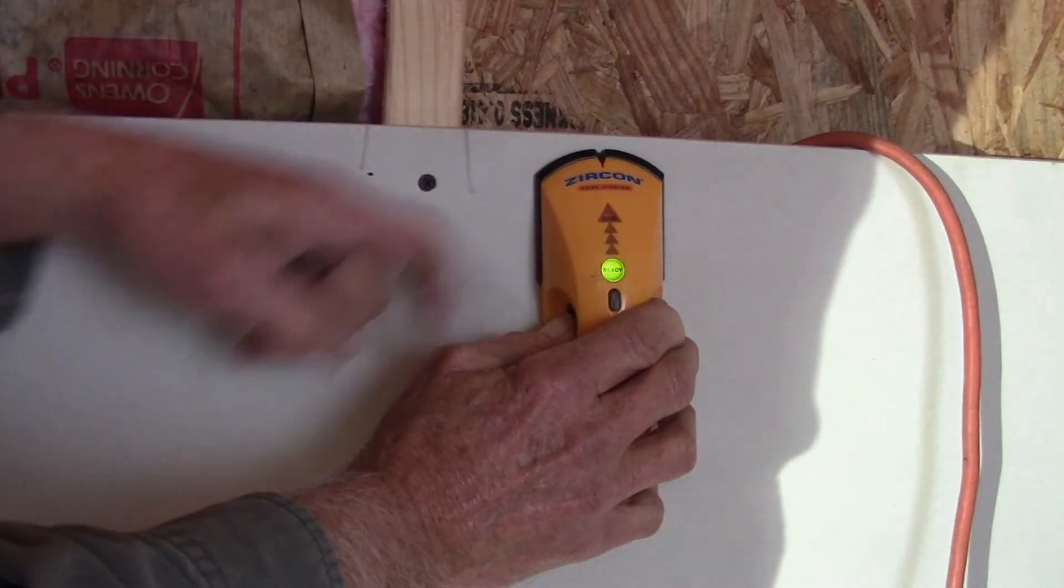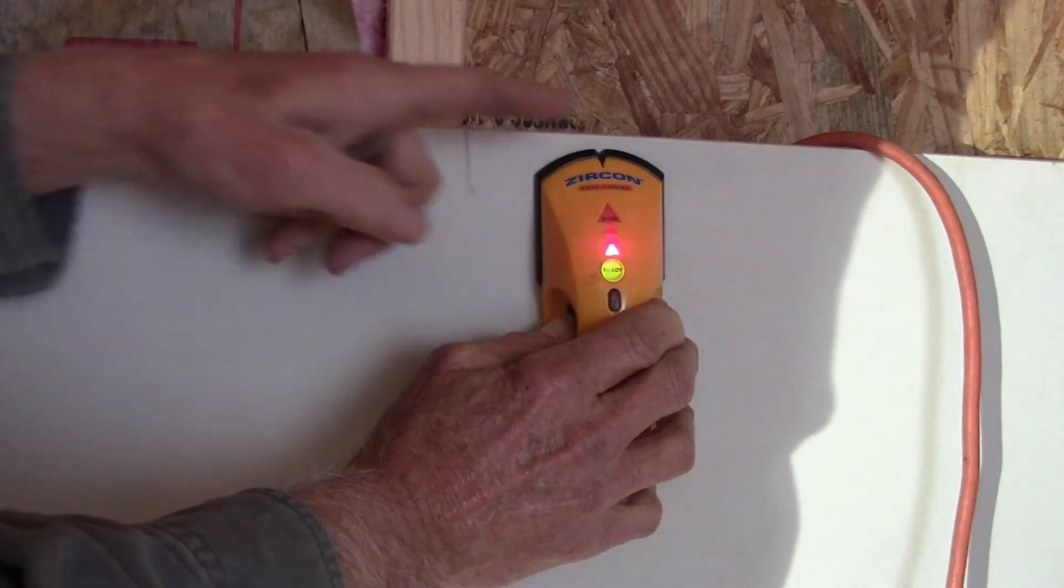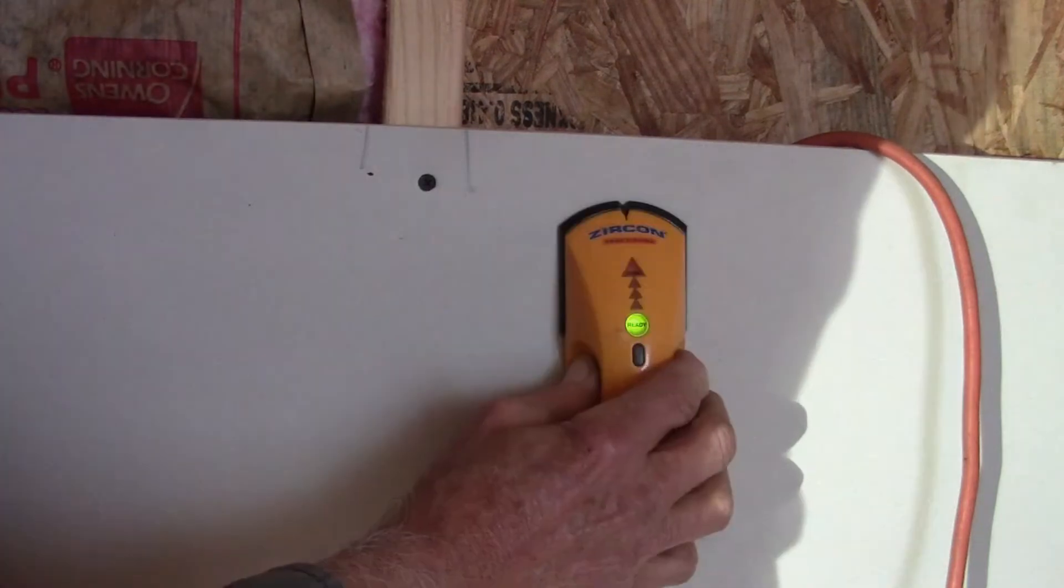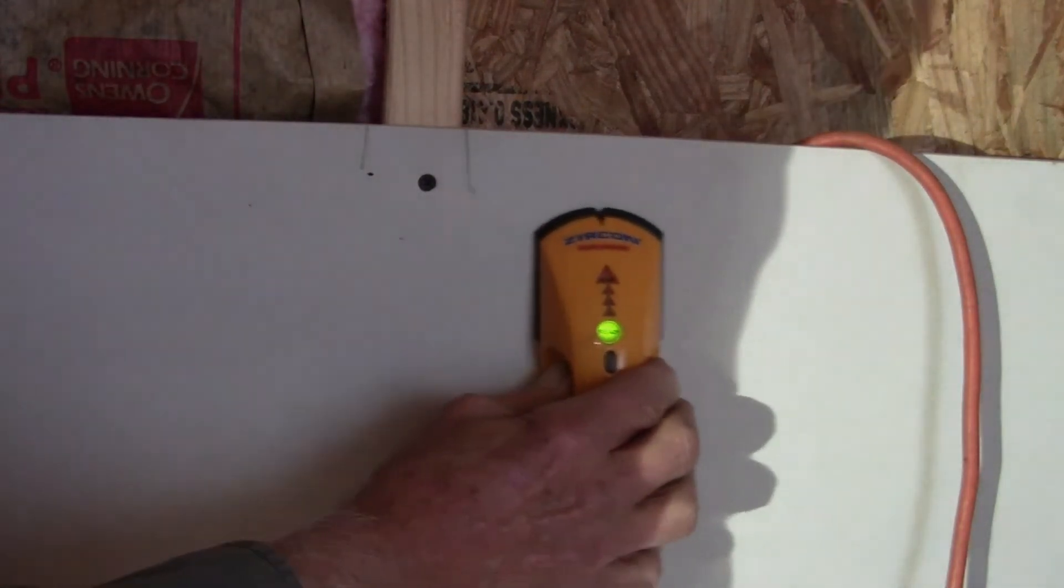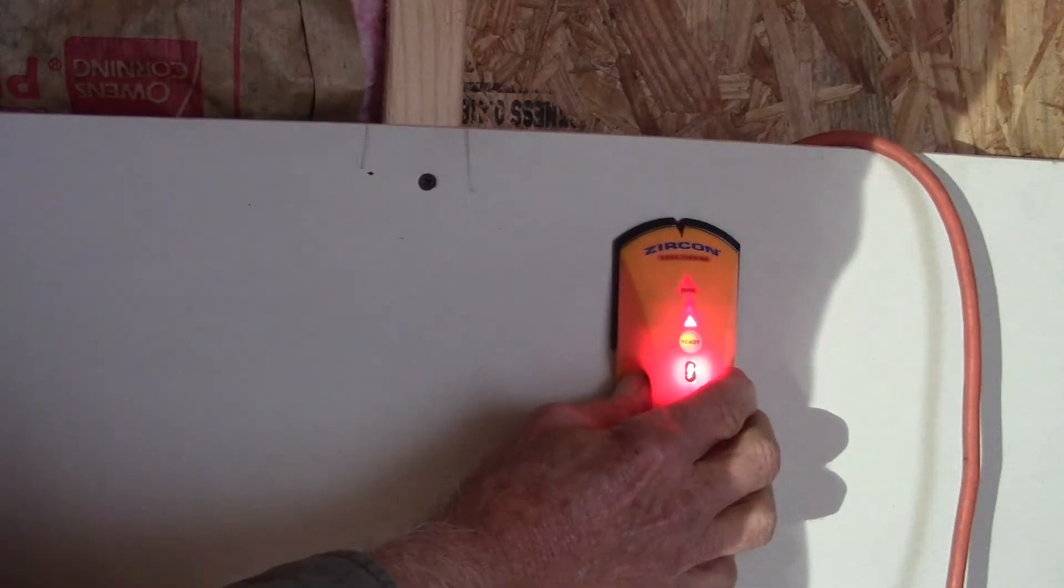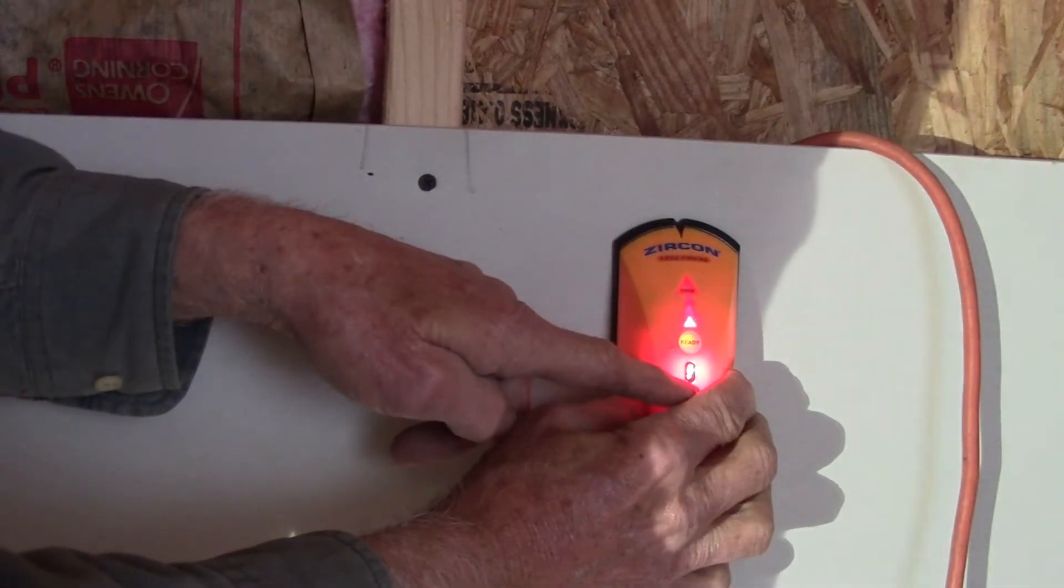Wait for the green light—that's my finger that's picking up. Now we're going to see if it'll pick up the electrical. See, there it's letting us know there's an electrical wire behind there.